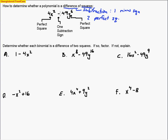It doesn't matter where that minus sign is — it can be between the terms or in front of the first term. It doesn't really matter as long as there's just one minus sign and we have two perfect squares. So let's see if this is a perfect square: if 4x² is a perfect square, we can take its square root.